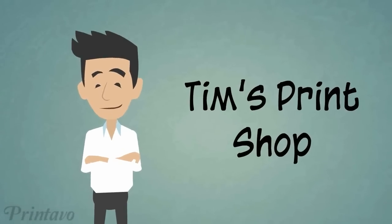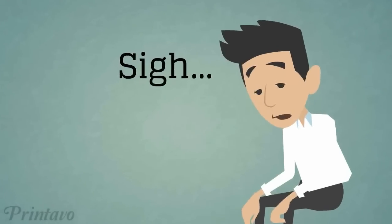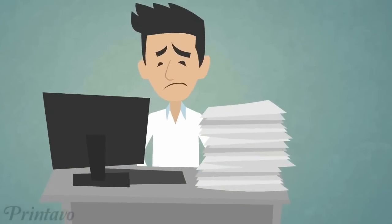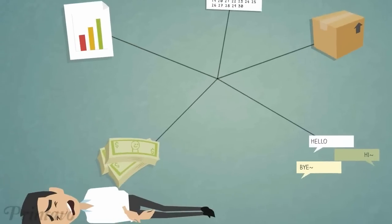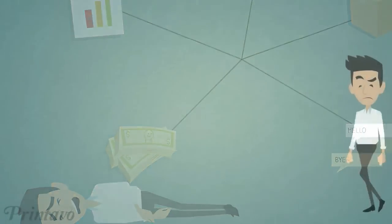So you run a screen print or embroidery shop and things just aren't organized. There's paper everywhere, lost invoices, and you're using three or more systems to manage it all. So what do you do?